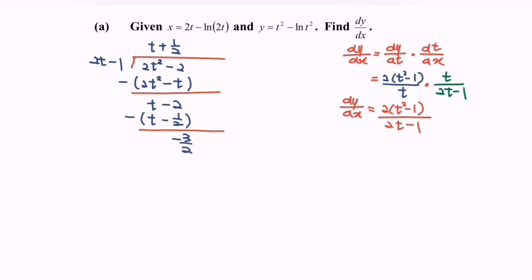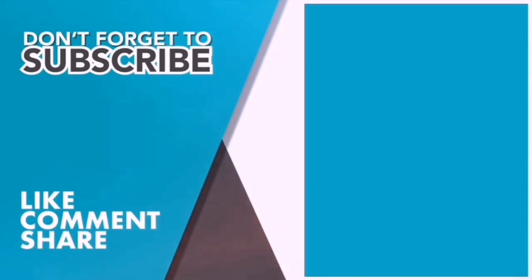Rewriting the result, dy/dx equals t plus 1/2 minus (3/2) over (2t minus 1). This is the simplest form. If you are new here, kindly consider subscribing to this channel and sharing this video with your friends. Thank you so much for watching. Bye.